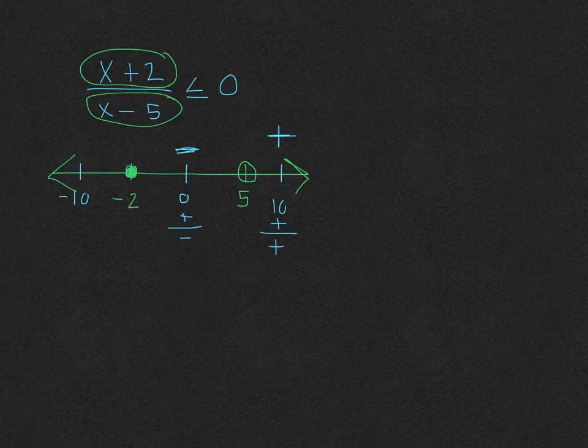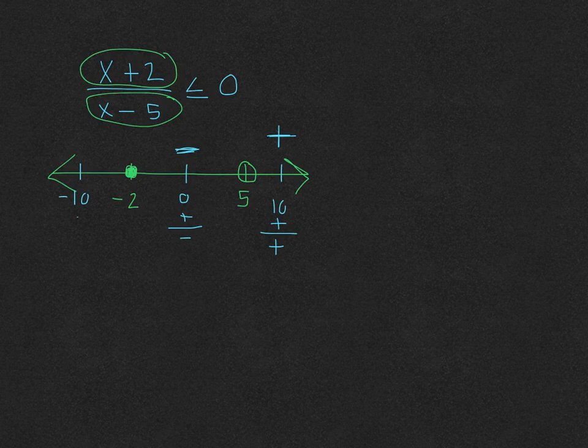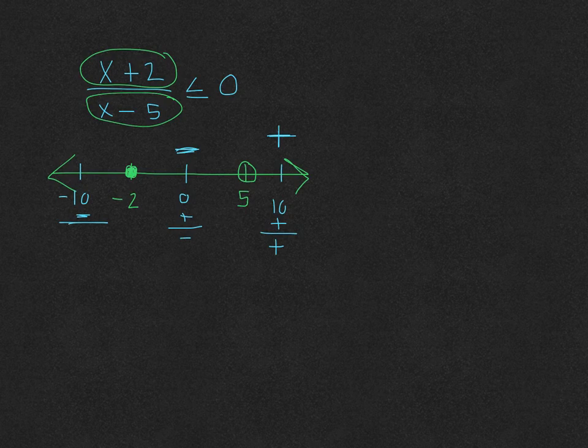Now let's try negative 10. Negative 10 plus 2 is negative 8. Negative 10 minus 5 is negative 15. A negative divided by a negative is positive.